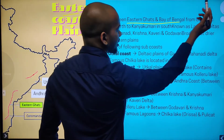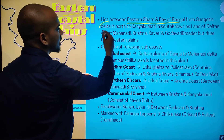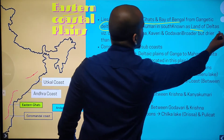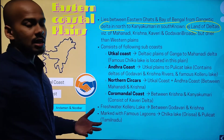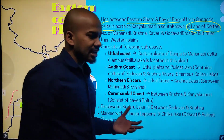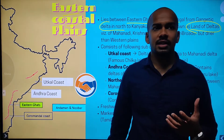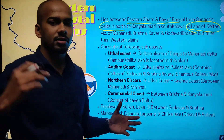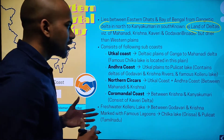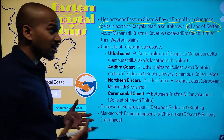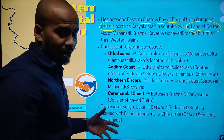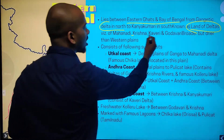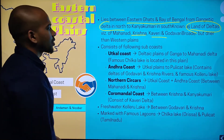The eastern coastal plain lies between the Eastern Ghats and the Bay of Bengal, from the Gangetic Delta in the north to Kanyakumari in the south. It is known as the land of deltas because many deltas are formed here. Looking at the eastern side, the rivers will be very slow compared to the western side because the Western Ghats are more steep and the rivers will be faster there. Here it will be slower comparatively, and a lot of deltas are formed by rivers like Ganga, Mahanadi, Krishna, Kaveri, and so on.